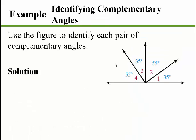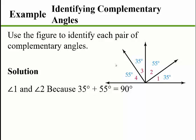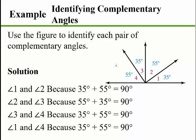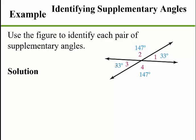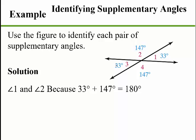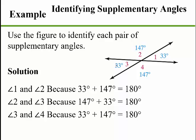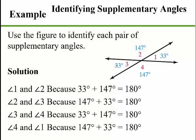Now use the figure to identify each pair of complementary angles. Remember, they just have to sum to 90 degrees. Angles 1 and 2 sum to 90 degrees; angles 2 and 3 sum to 90 degrees; angles 3 and 4 sum to 90 degrees; and angles 1 and 4 sum to 90 degrees — so there are four pairs of complementary angles. For supplementary pairs, they have to sum to 180 degrees: angles 1 and 2, angles 2 and 3, angles 3 and 4, and angles 4 and 1 each sum to 180 degrees.